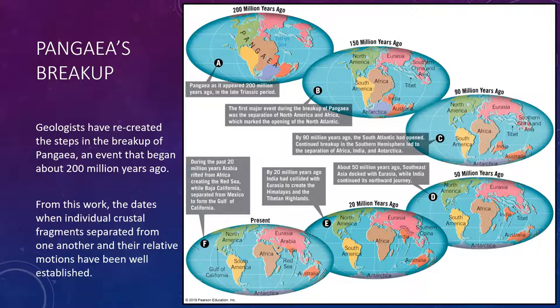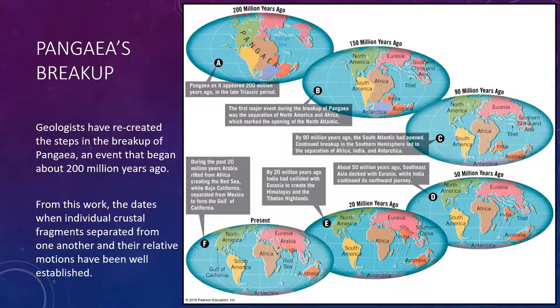An important consequence of Pangea's breakup was the creation of a new ocean basin — the Atlantic. Splitting of the supercontinent did not occur simultaneously along all of the margins of the Atlantic. The first split developed between North America and Africa. Here the continental crust was highly fractured, providing pathways for huge quantities of fluid lavas to reach the surface. Today, these lavas are represented by weathered igneous rocks found along the eastern seaboard of the United States, primarily buried beneath the sedimentary rocks that formed from the continental shelf. Radiometric dating of these solidified lavas indicates that rifting began around 190 to 200 million years ago, representing the birth date for this section of the North Atlantic Ocean.